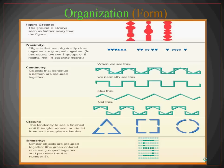Proximity is another form of organization — objects that are physically close together are grouped together. When we look at these different blue shapes, we see three groups of six; we don't see 18 separate hearts. Using our perceptual organizational ability, we can glance at this and say these are three sets of six, not 18 randomly scattered. Proximity helps us look around the world and find different groupings of things, rather than seeing everything as existing individually.